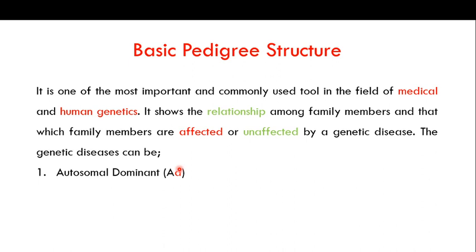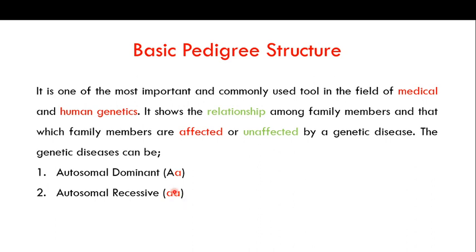The second type is autosomal recessive. Autosomal means the same thing as discussed for autosomal dominant. Recessive means that both copies of the pair have to be in their abnormal form — both alleles must be abnormal — in order to express that particular genetic disorder. So the difference is: for dominant you only need a single copy of the abnormal allele, whereas for recessive both copies must be in their abnormal state.